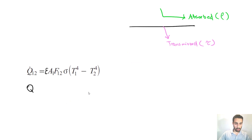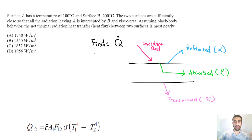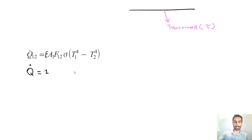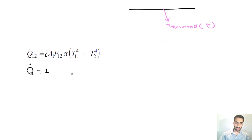Setting up Q̇: emissivity = 1. The area is not given in this problem, so we assume A = 1. The view factor is also 1.